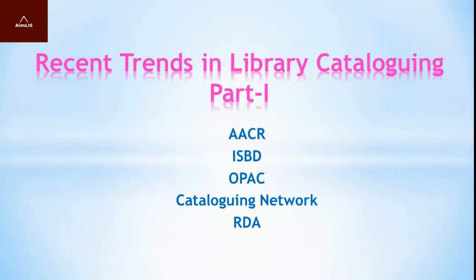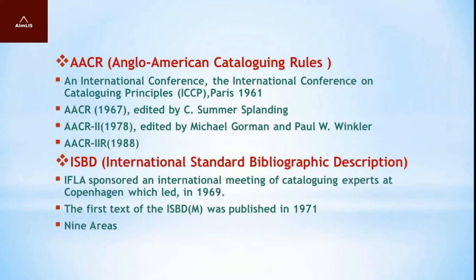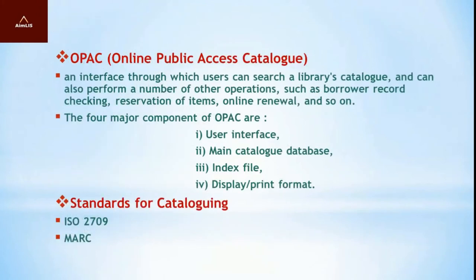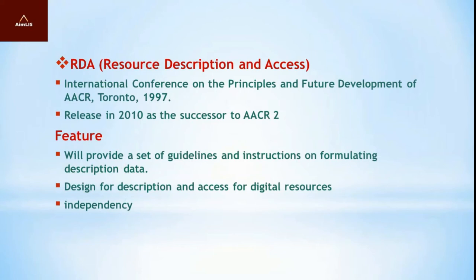From the previous video, Recent Trends in Library Cataloging Part 1, we learned about the meaning and history of library cataloging. We covered when and how AACR and ISBT emerged, discussed the 9 areas of ISBT, focused on the significance of OPAC and its major components, covered OCLC, RLIN, and WLN, and revealed the causes behind the emergence of RDA and its features.